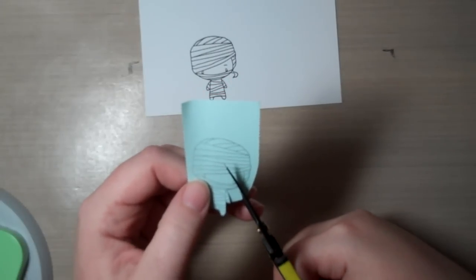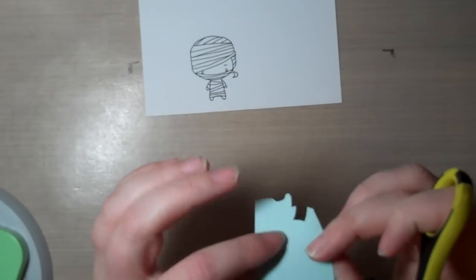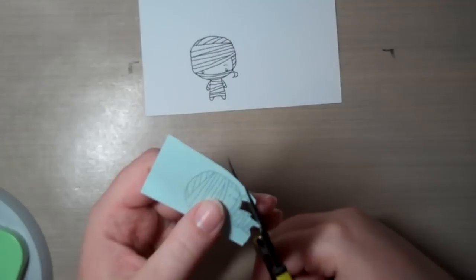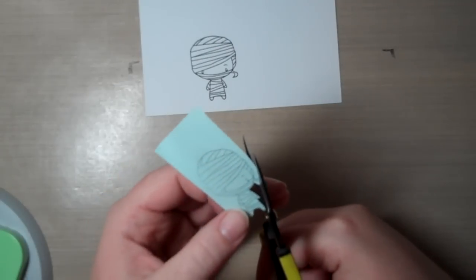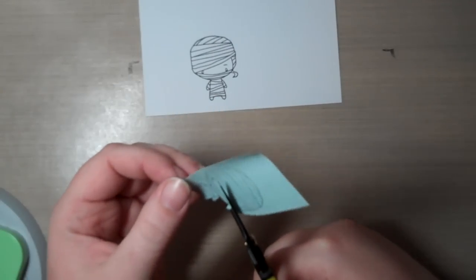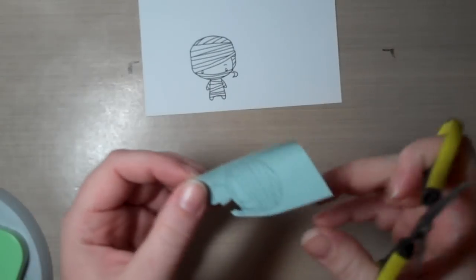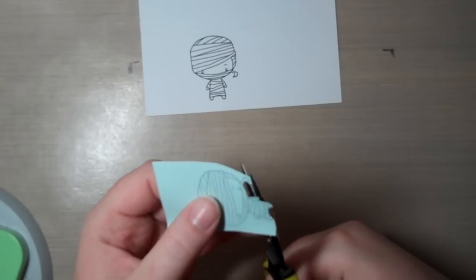The reason why I use the post-it note is because you automatically have a little bit of tack that is going to hold it on just enough that it won't move around as you're trying to stamp over it. But it's also not going to hurt the cardstock when you pull it away at the end.